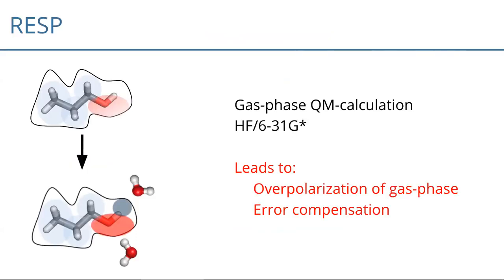Starting with the RESP-based approach: the idea is we use a gas phase QM calculation at a quite low level — Hartree-Fock 6-31G* — then calculate the electrostatic potential around a molecule, and fit charges reproducing that electrostatic potential. Hartree-Fock with that low basis set is somehow overpolarizing the gas phase, so we can use those charges for condensed phase simulations.